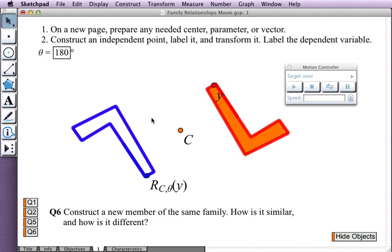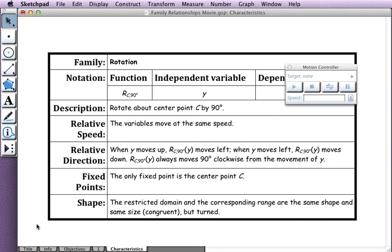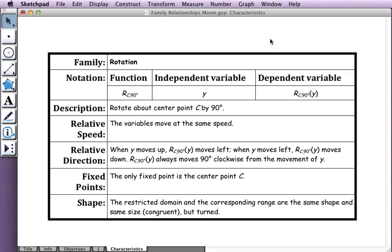So after completing my investigation of the rotation function, I have one more step to do, which is to fill in the characteristic table that describes the characteristics of this particular function. I give the function notation and so forth, relative speed, direction, and fixed points. And one of my observations on the shape, relative shape of the restricted domain and the corresponding range, are that they are the same shape and the same size, and I know that means that they're congruent. So that's an important aspect, the relative shape, of understanding what this family is and how it works.